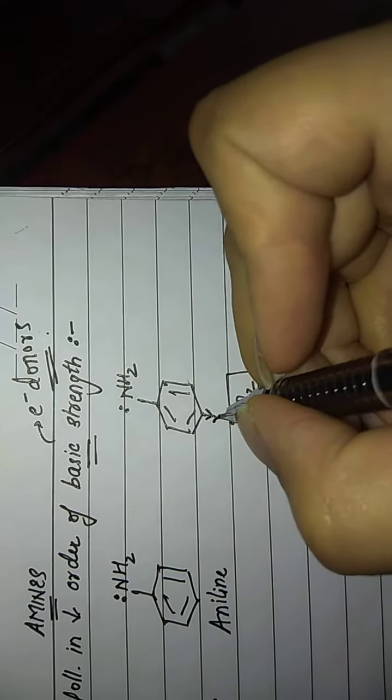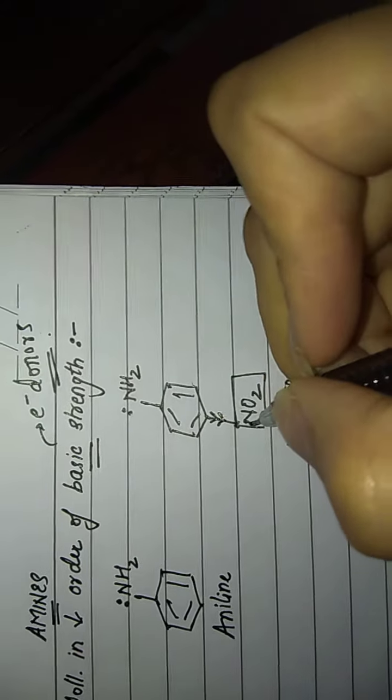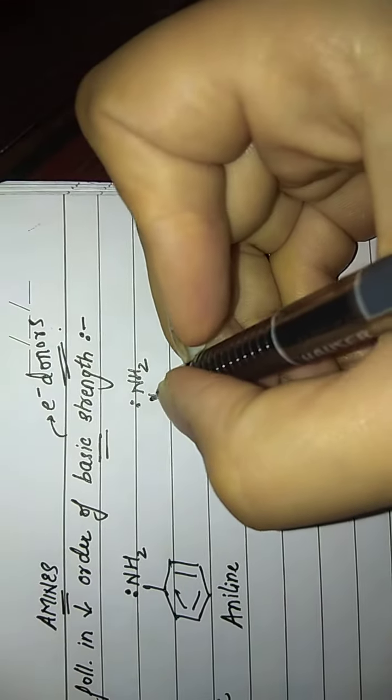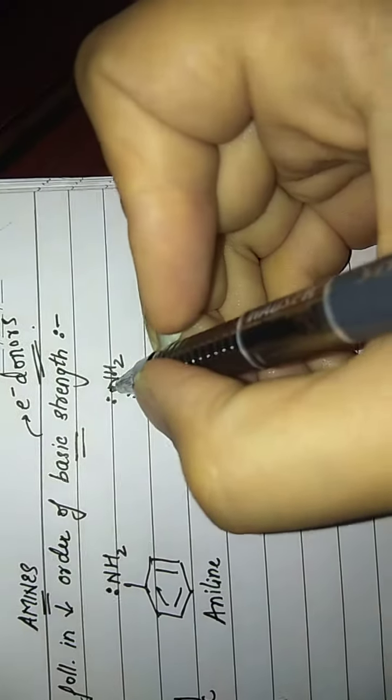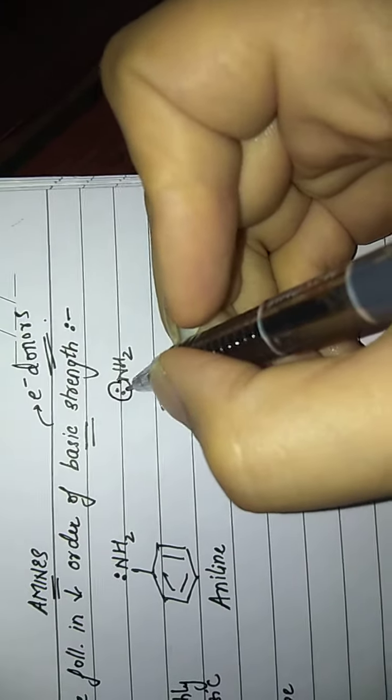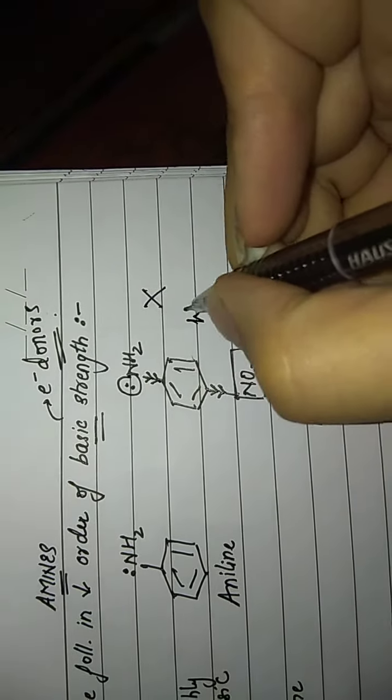Let us check this molecule now. Nitro group is an electron withdrawing group. As a result of which it will withdraw the electron density from the benzene ring, and the benzene ring would withdraw the electron density from the nitrogen atom. Because of which this lone pair of electrons is not easily available for donation, thus making it a weak base.